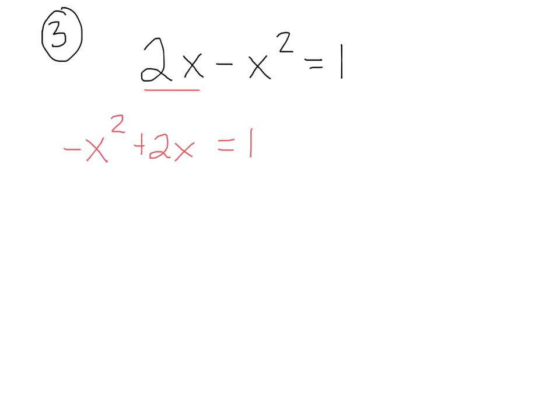Now, I need that 1 on the left, so what do I do? Subtract 1 on both sides, so I have negative x squared plus 2x minus 1 equals 0. And so I've successfully converted this into standard form.